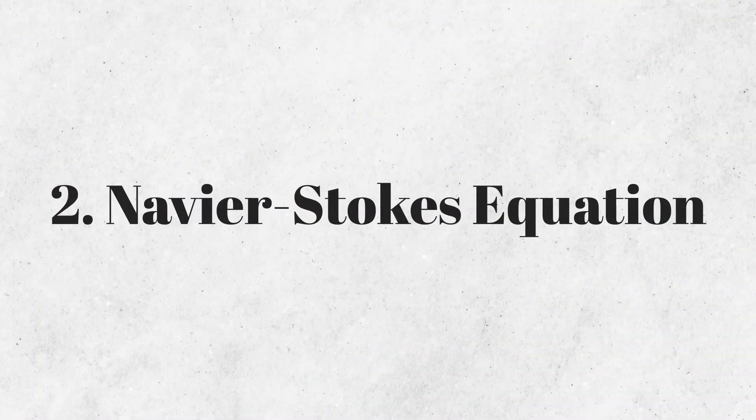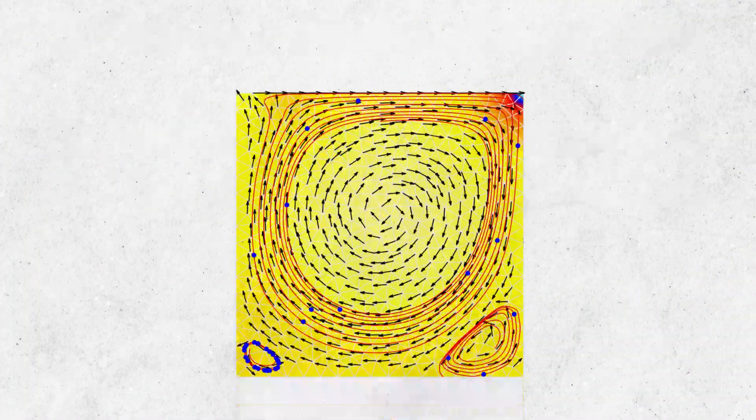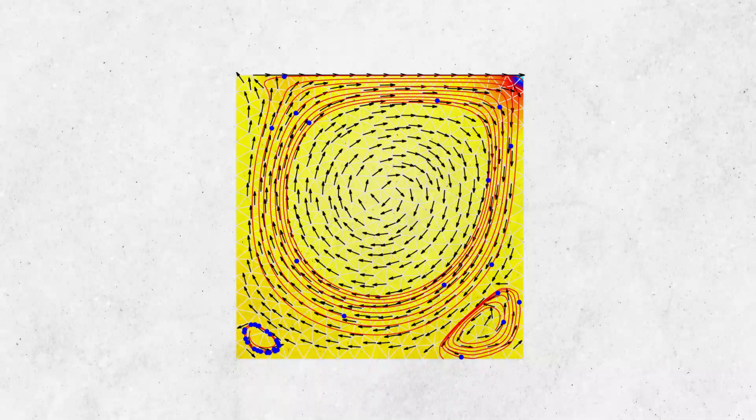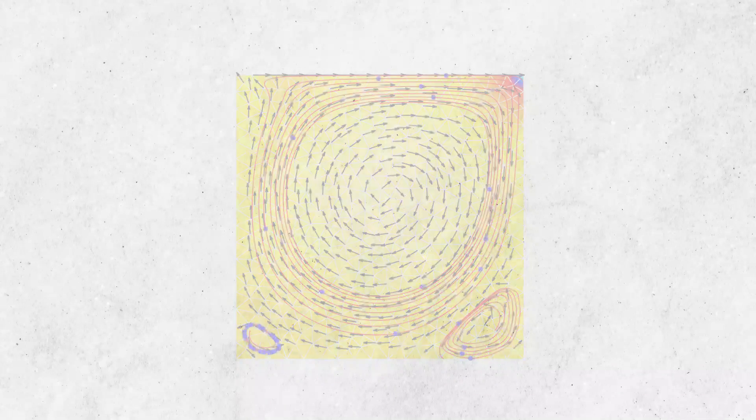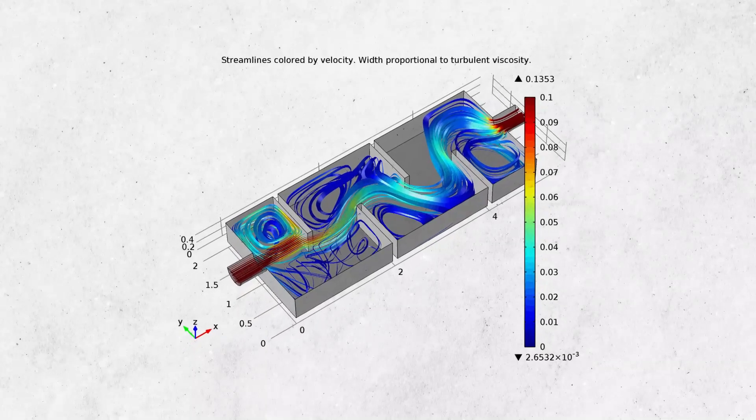Next we have the Navier-Stokes equation. This equation describes the motion of fluid substances such as liquids and gases and is used in various fields like aerodynamics and hydrodynamics.